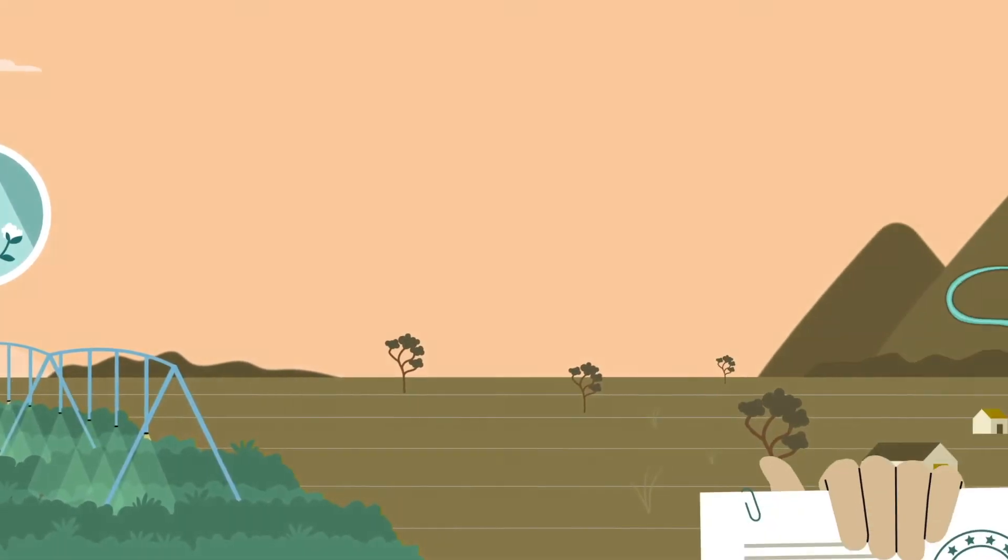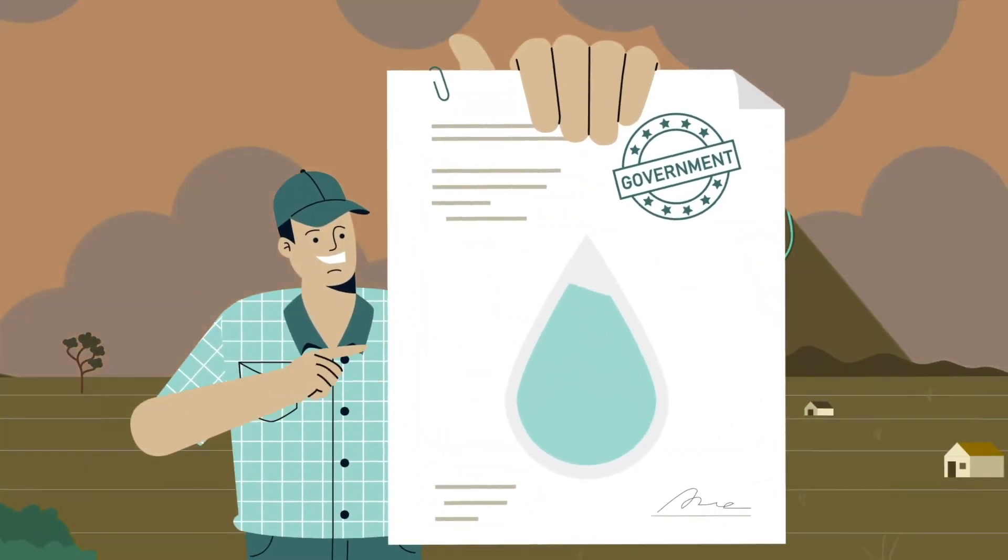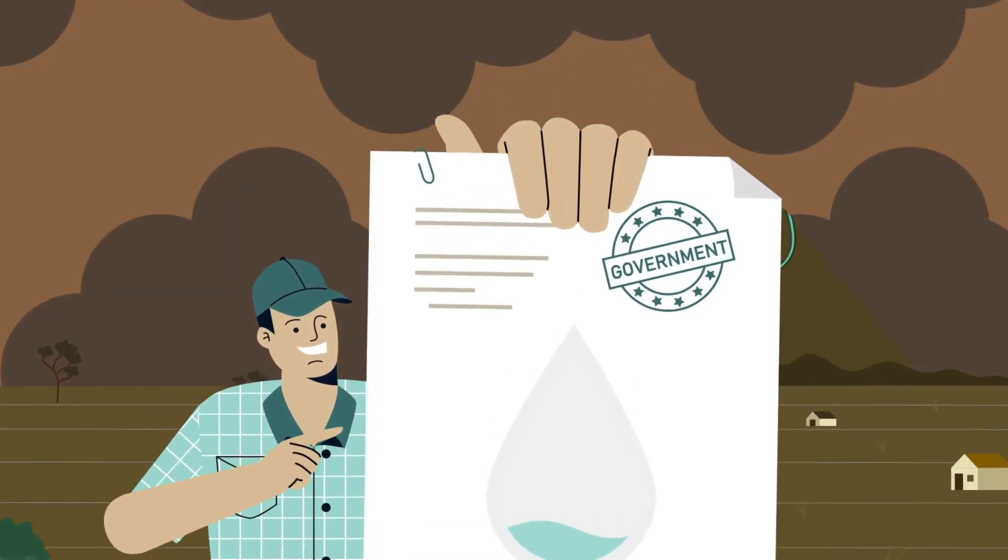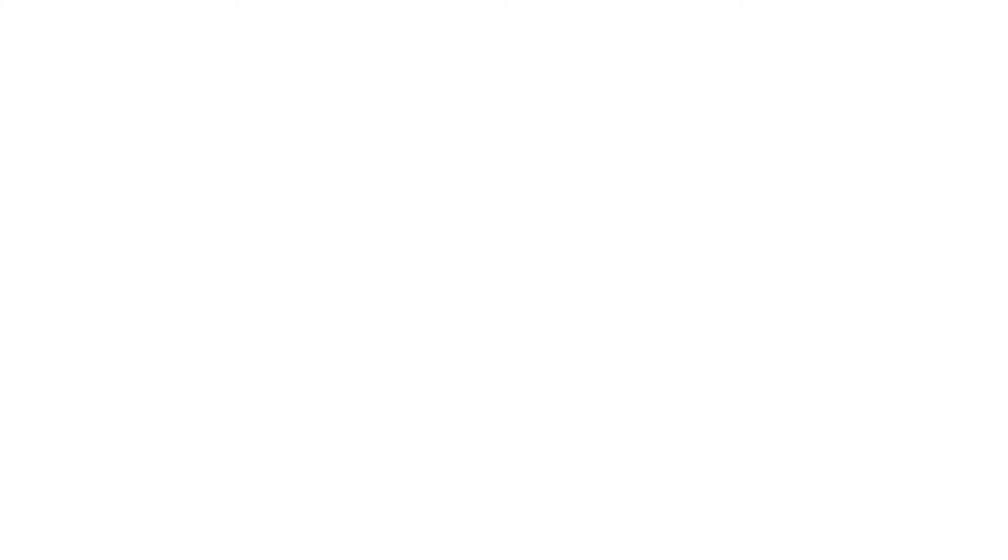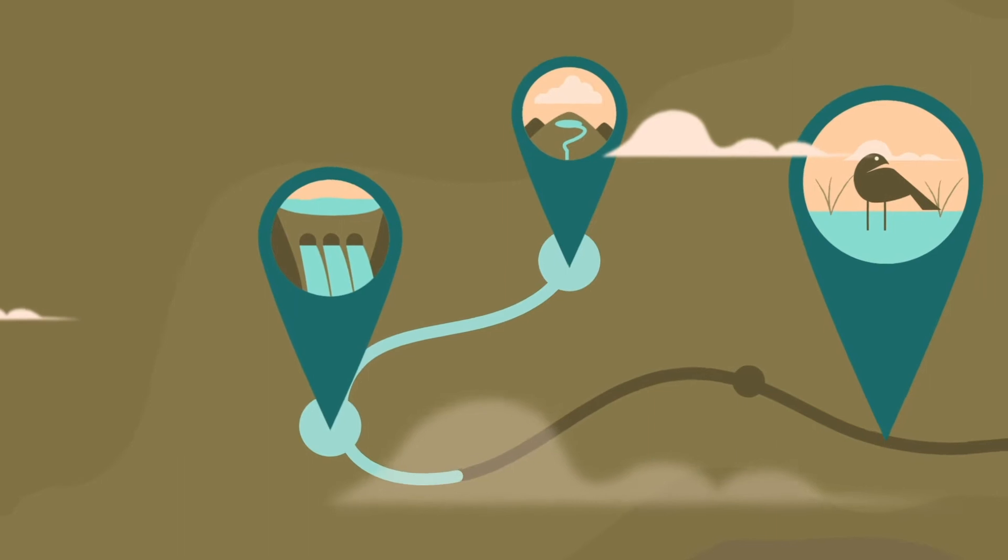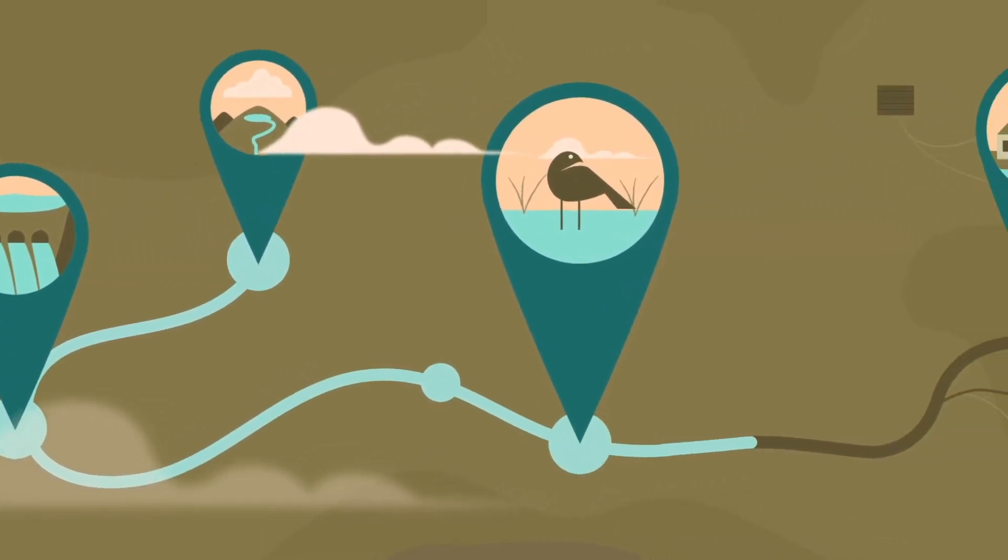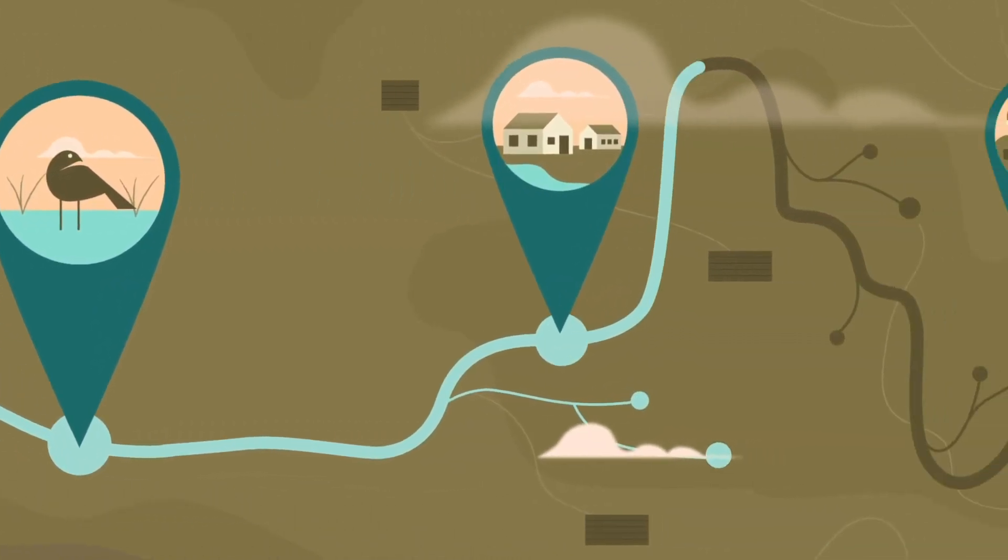There are strict government rules to make sure water is divided fairly. When the rain comes, this means rivers and wetlands always get water first. Then, communities get what they need.